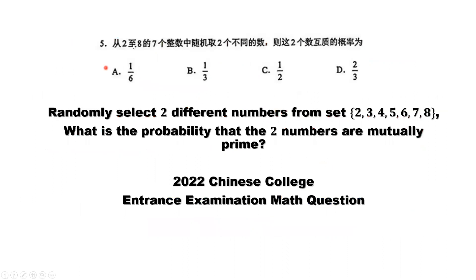This is the original question in Chinese here. Mutually prime, we have different names. Sometimes we call coprime or relatively prime. They are the same thing. How to solve this question?